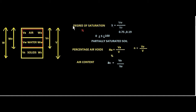Degree of saturation is the extent of saturation of the soil. In technical terms, it is the ratio of volume of water to the volume of voids — that is, how much part of the voids is filled with water. It is represented with the letter S, so S equals volume of water divided by volume of voids. Degree of saturation is expressed in percentage.